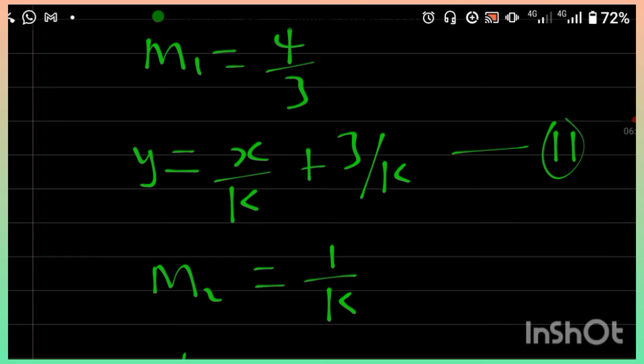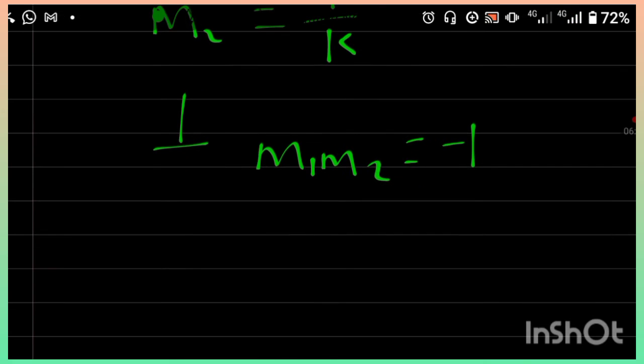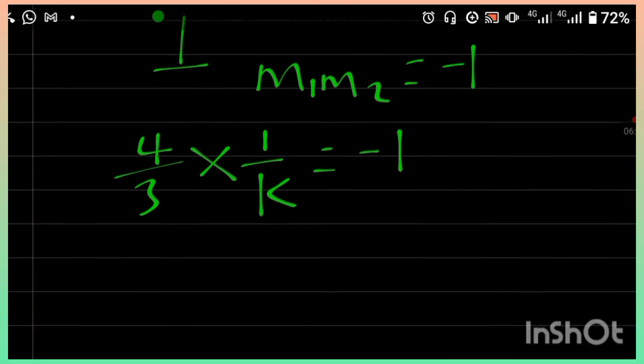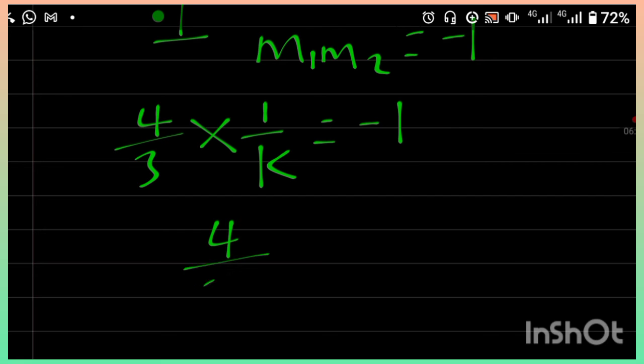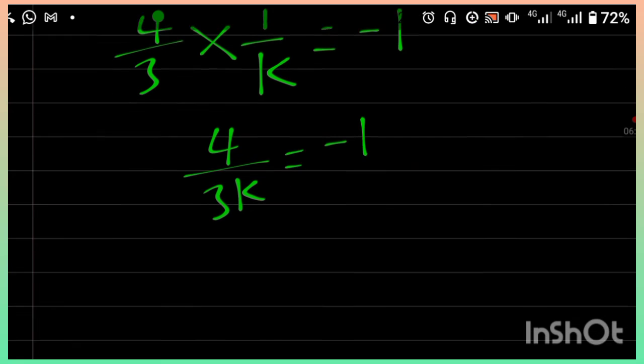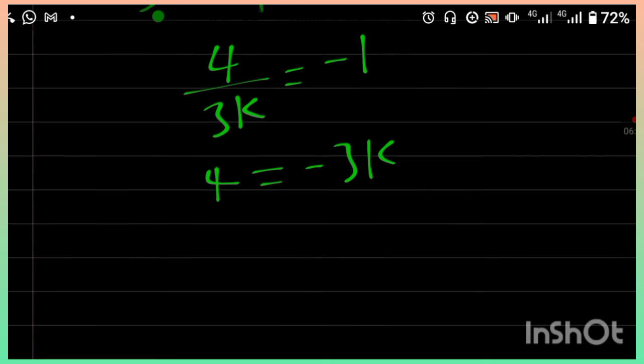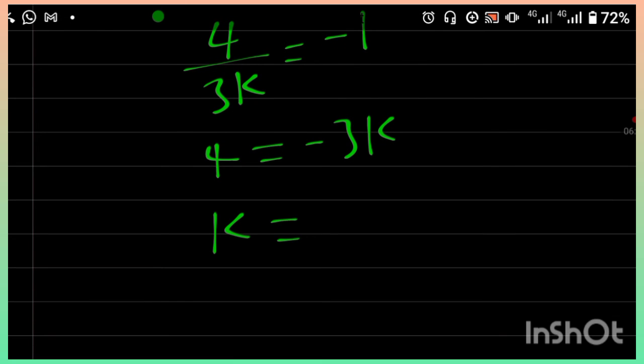My m1 is 4 over 3, then times my m2, 1 over k, is equal to minus 1. I have 4 over 3k is equal to minus 1. 4 is equal to minus 3k. Therefore, k is equal to minus 4 over 3.